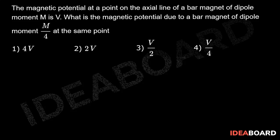Generally, magnetic potential at a distance D from the bar magnet on its axial line is given by magnetic potential due to bar magnet on its axial line.